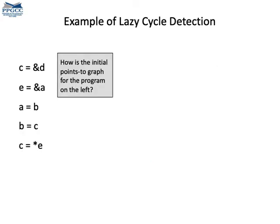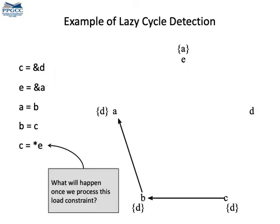Let me use this program here to demonstrate how lazy cycle detection works. We start building the points-to graph. The graph has five vertices, one for each variable in the program, and two solid edges, one for each simple constraint, namely A equals B and B equals C. We propagate the points-to facts from C to B and then to A, before we start iterating the algorithm.